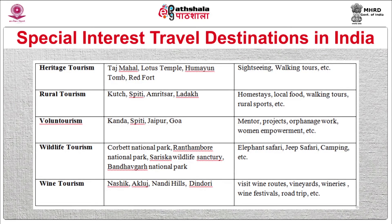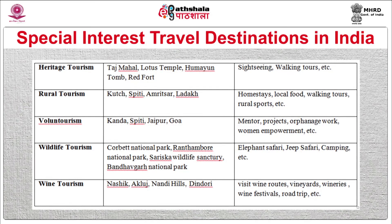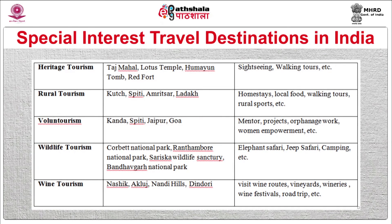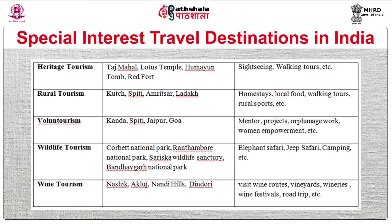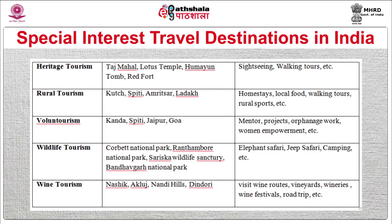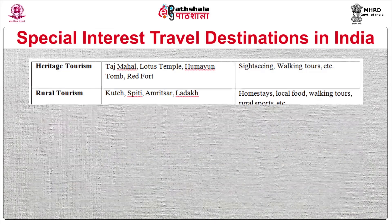For wildlife tourism, Corbett National Park, Ranthambore National Park, Sariska Wildlife Sanctuary, Bandhavgarh National Park, and many other national parks of India are famous. For wine tourism, Nasik and Nandi Hills, Akluj, and Dindori are the popular destinations.